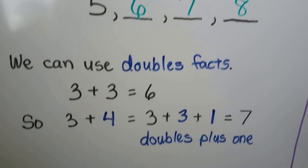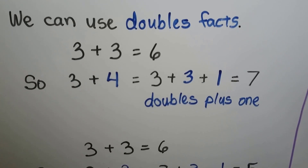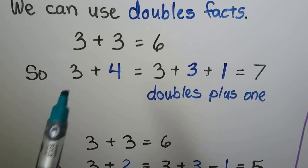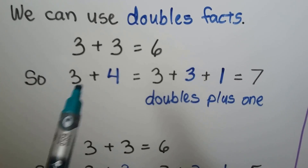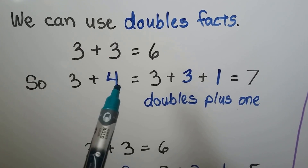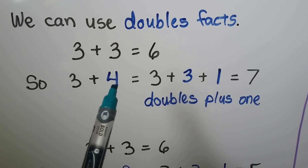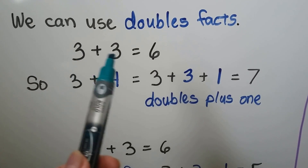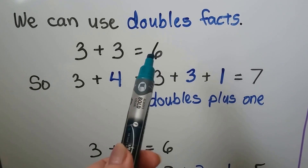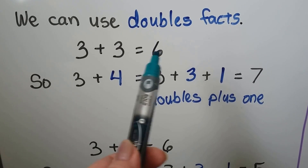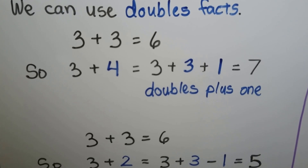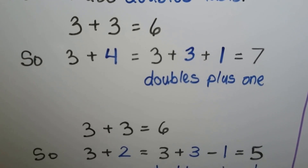We can use doubles facts. Three plus three is equal to six, so three plus four would be one more than that three. Four is one more, so we could use three plus three plus one more — it would be one more than the six. It would be a seven. That's using doubles plus one.